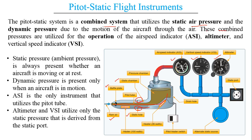These combined pressures are utilized for the operation of the airspeed indicator, altimeter, and vertical speed indicator. The pitot static tube indicated in red is connected with the airspeed indicator, and there are basically two static ports indicated in blue used for redundancy and accuracy. We can see the connections running to the airspeed indicator, the vertical speed indicator, and the altimeter. Notably, the airspeed indicator is the only instrument receiving both connections, while the other two instruments receive only the static port connection.